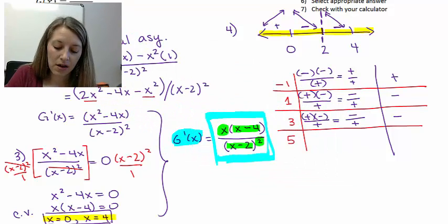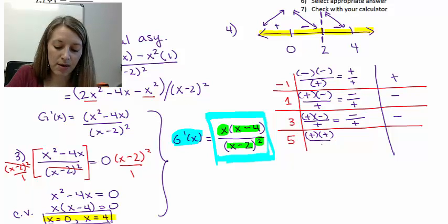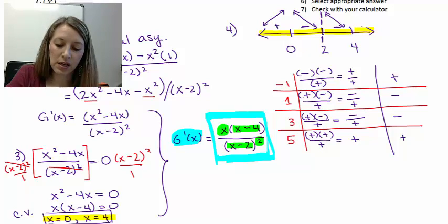Last, testing 5: x gives a positive, x minus 4 gives a positive, and the denominator doesn't matter because we're squaring it — it will always be positive. So this is positive, or increasing, beyond 4.